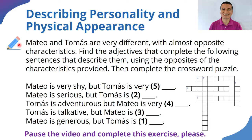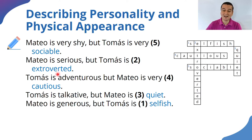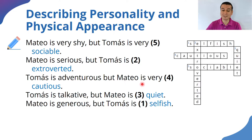Most of them were very simple. We could say: Mateo is very shy but Tomas is very sociable. Mateo is serious but Tomas is the opposite — extroverted. Note that 'extrovert' can be used as a noun, so I wanted to use the adjective form 'extroverted' here. Tomas is adventurous but Mateo is very cautious.